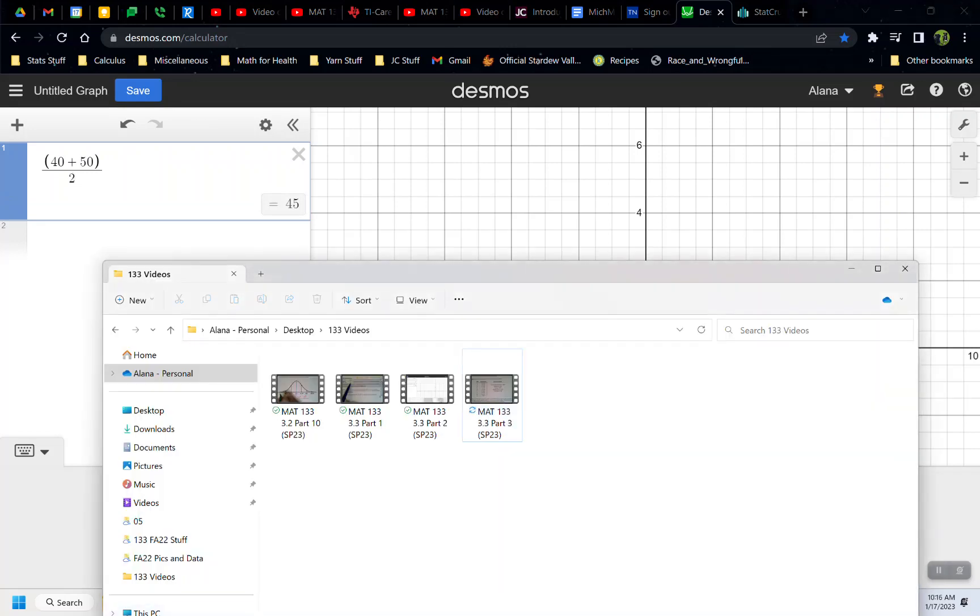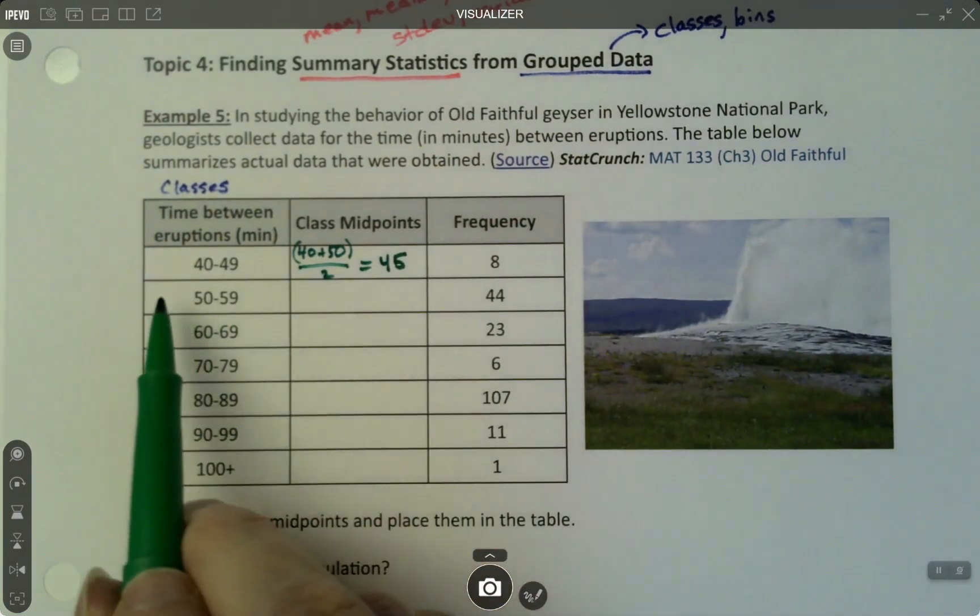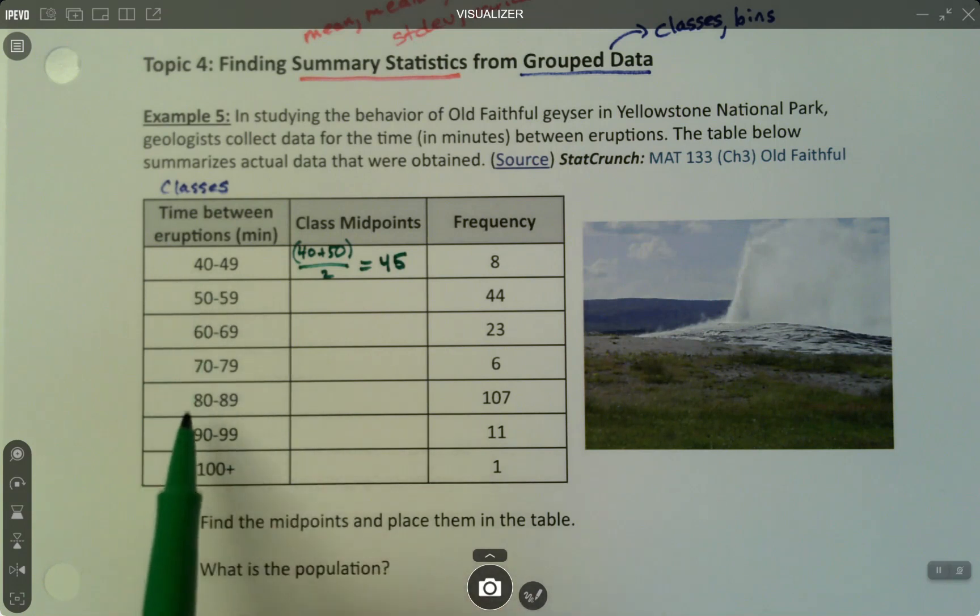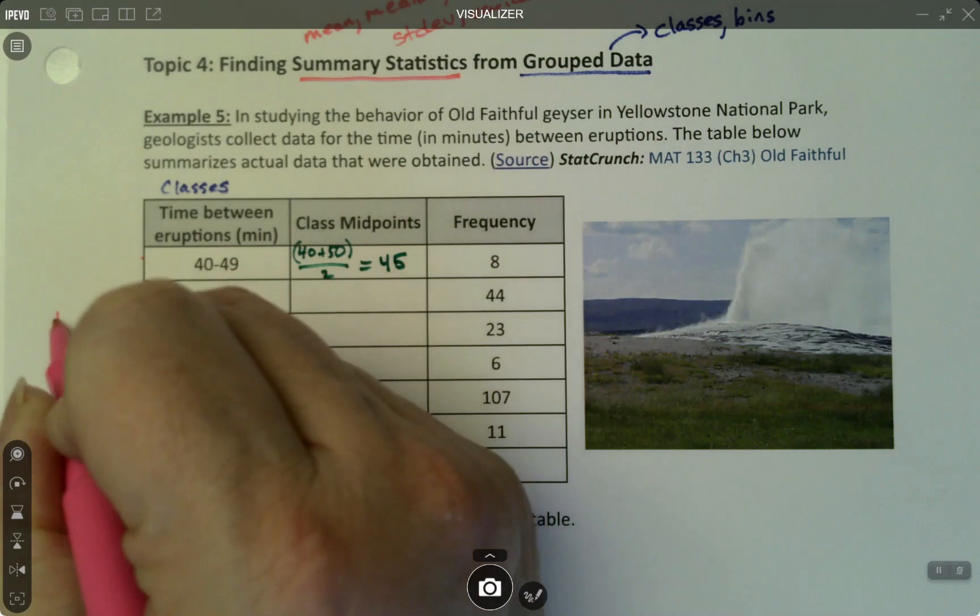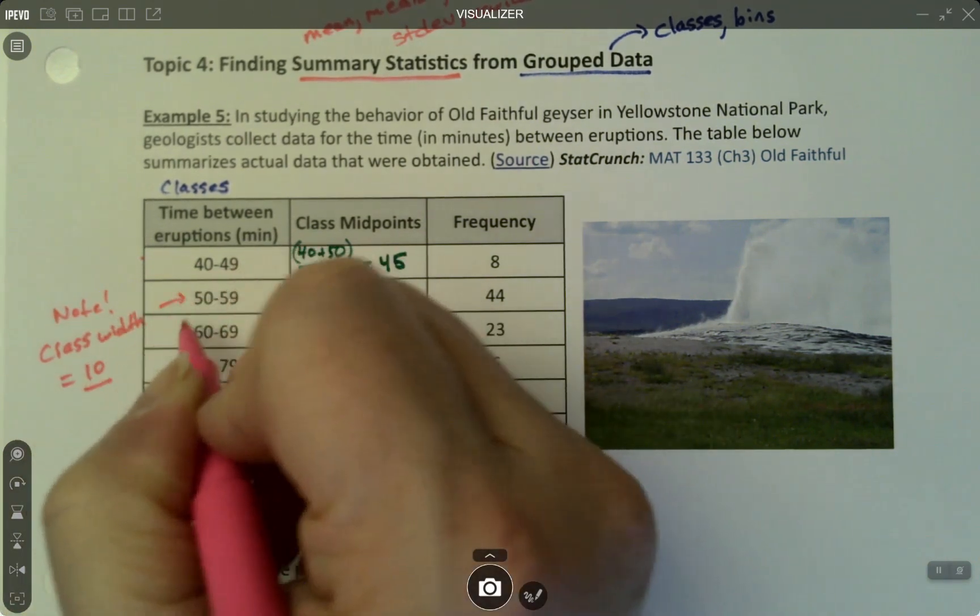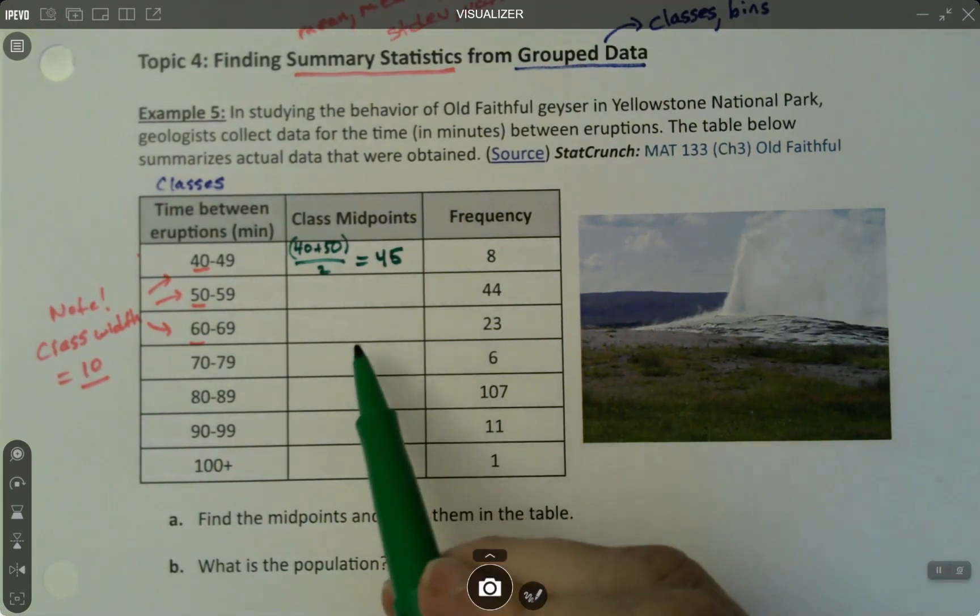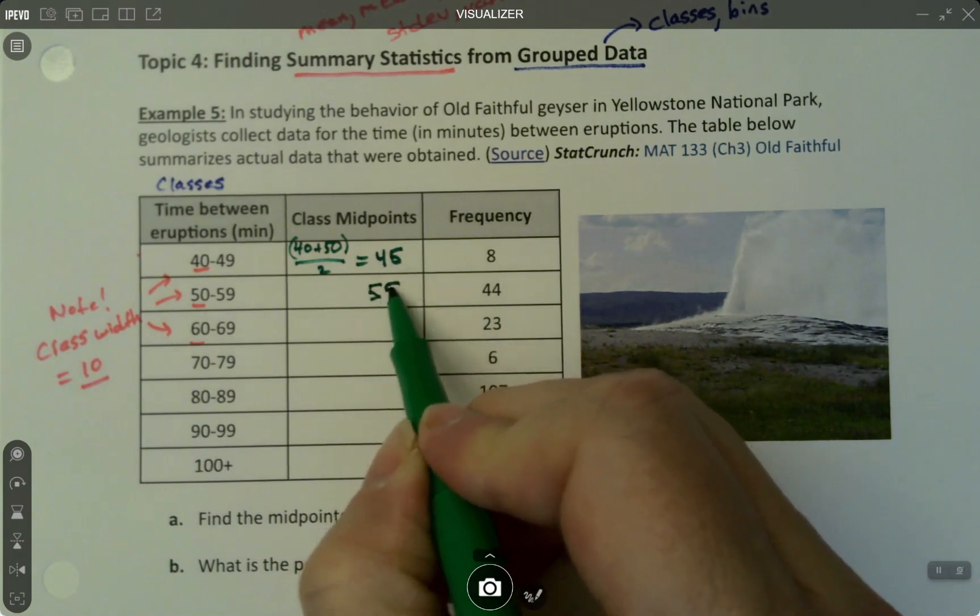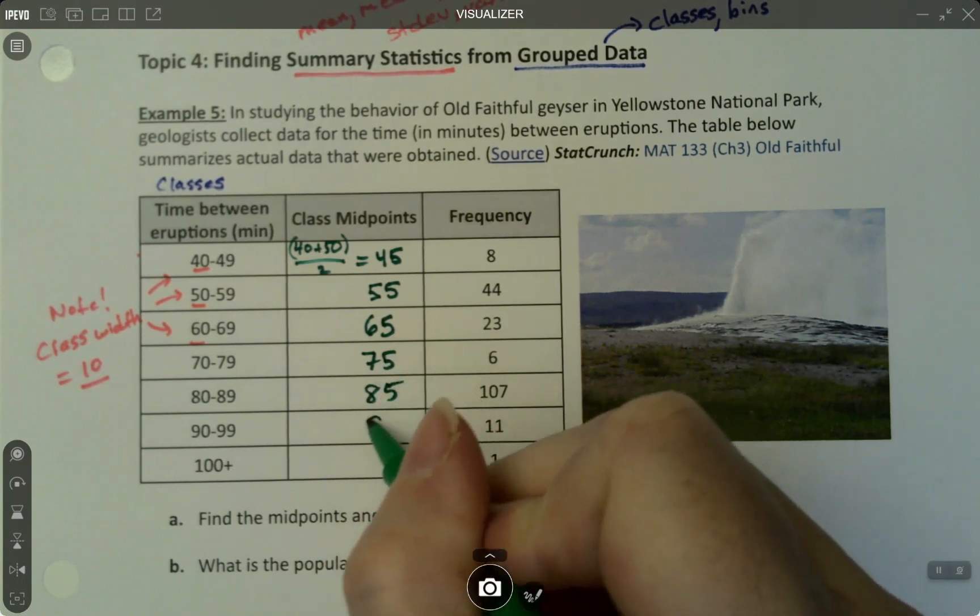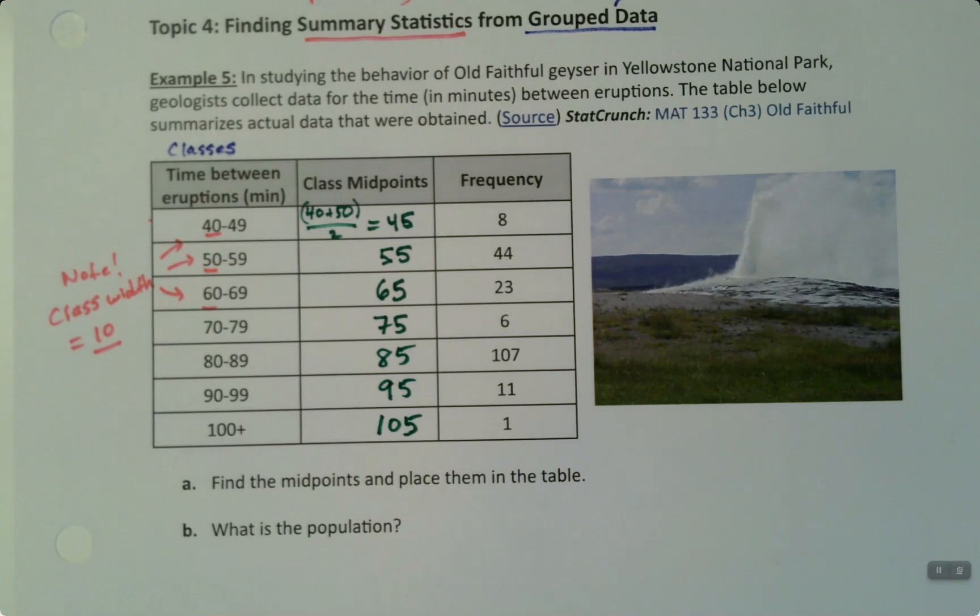So 40 plus 50, add them together—it helps if you put them in parentheses—and divide by 2. I think we all can guess what that's going to be, what's halfway between 40 and 50. But nevertheless, let me type it so you guys can see it one more time. Ta-da! It's 45. So let me go back. There it is. All right, so 45. Part A is done. We found the midpoints, and we placed them in the table.